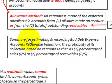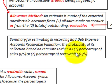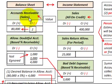To summarize: for estimating and recording bad debt expense, we're valuing accounts receivable based on the probability of collection using estimates — either as a percentage of sales on the income statement (the income statement approach) or as a percentage of receivables on the balance sheet (the balance sheet approach). These are two different approaches to handling bad debt expense.